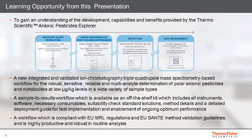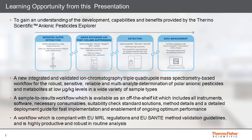Thank you for the introduction. We want to take this opportunity to discuss the development, capability, and benefits of the new product: the Thermo Scientific Anionic Pesticide Explorer. This is a new sample-to-result analytical workflow composed of four modules: an extraction module based on the Eurofian reference lab quick polar pesticide extraction method with solid phase extraction cleanup, followed by high performance ion chromatography separation, a triple quadrupole mass spectrometer detection module, and a Chromelion chromatography data system module. The modules are fully integrated and validated to provide robust, sensitive, and reliable multi-analyte determination of polar anionic pesticides and metabolites at low concentration levels in a wide variety of sample types.